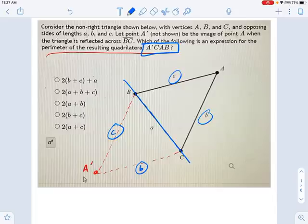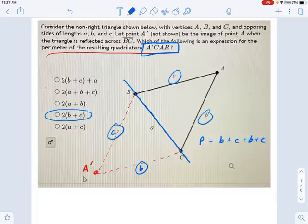So the perimeter is just going to be equal to B plus C plus B plus C. That's it. Now, which one of these statements on the left is equivalent? It's going to be this guy.